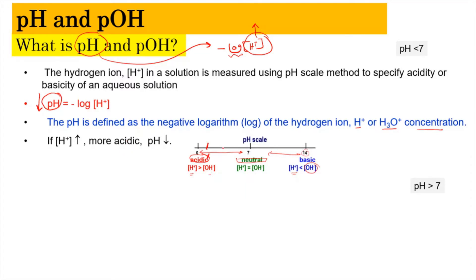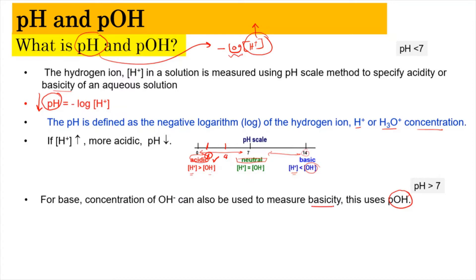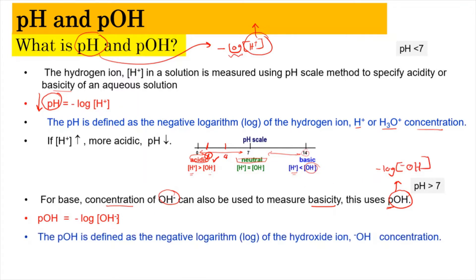A pH value of 1 is more acidic than a pH value of 4. We can also use pH to determine basicity — the higher the pH, the more basic the solution. We can also use pOH to measure basicity, specifically the concentration of the hydroxide ion. pOH = −log[OH⁻], where p refers to negative log and OH refers to the hydroxide ion concentration. The higher the OH⁻ concentration, the lower the pOH.